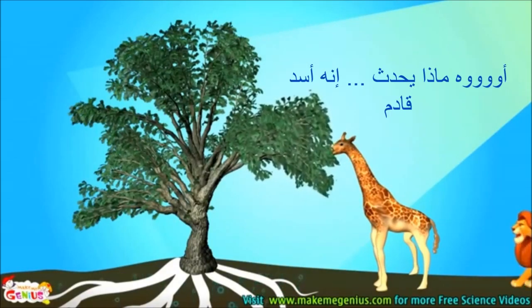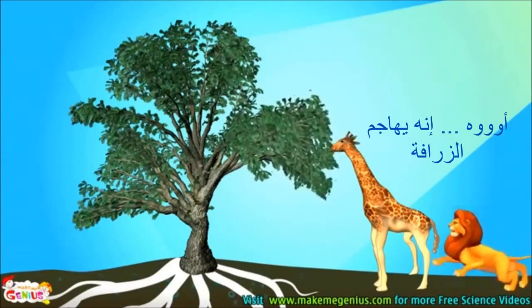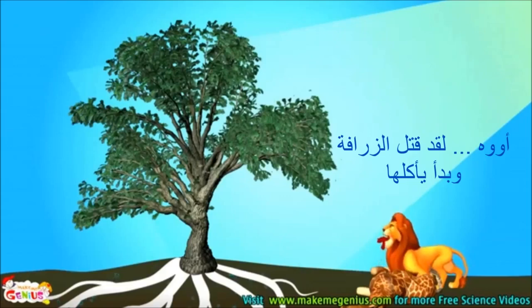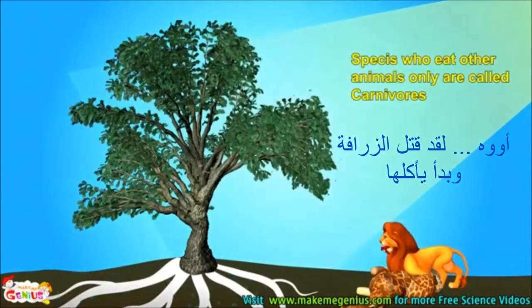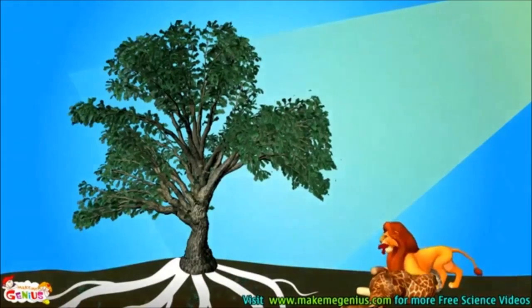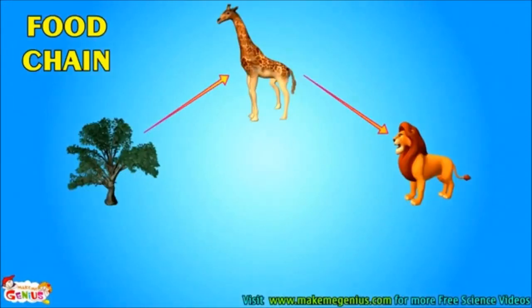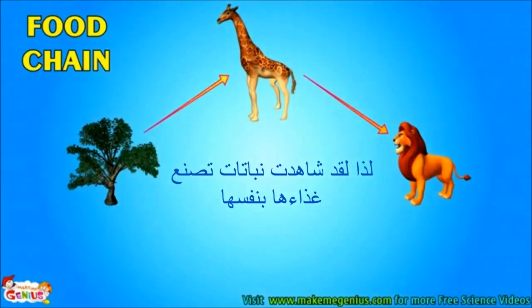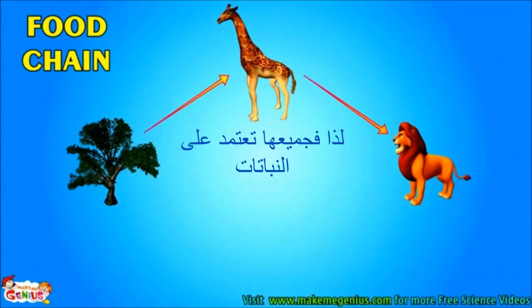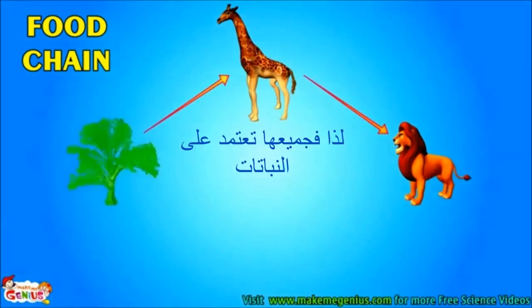A lion is coming — it is attacking the giraffe. It has killed the giraffe and is eating it. Species which eat other animals are called carnivores. So you have seen: plants make their own food, other animals eat plants, and some animals eat those animals.